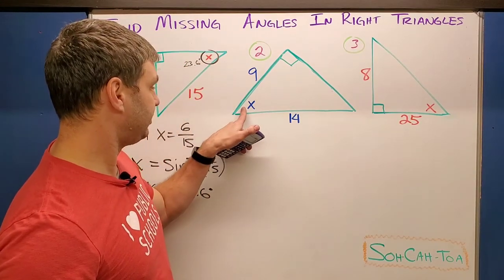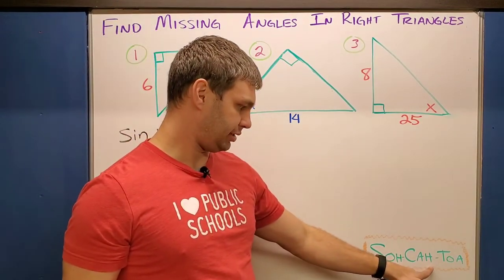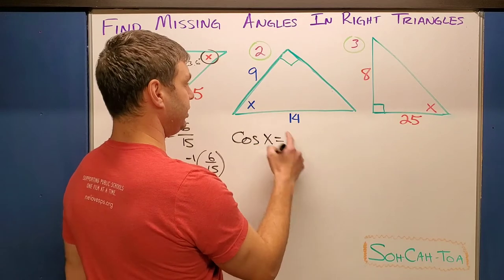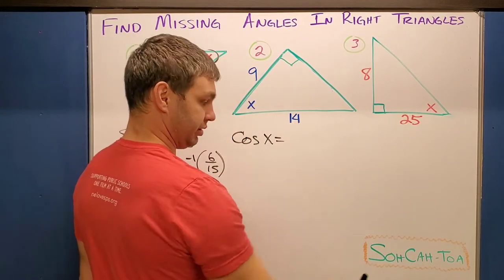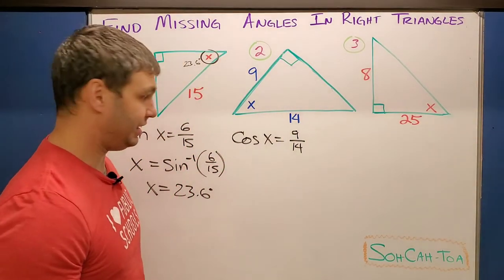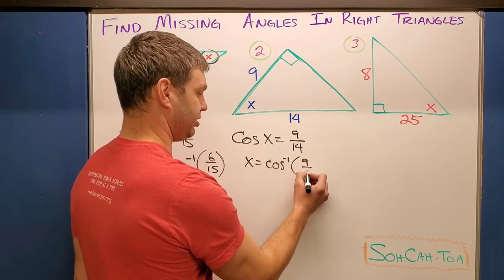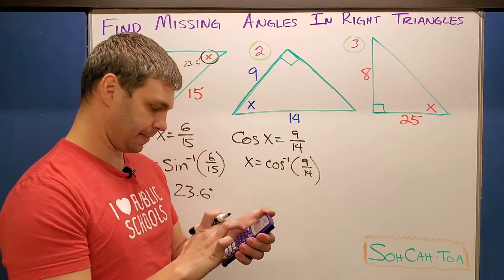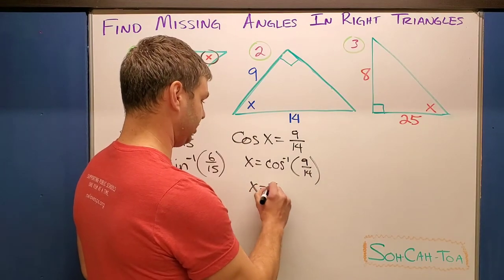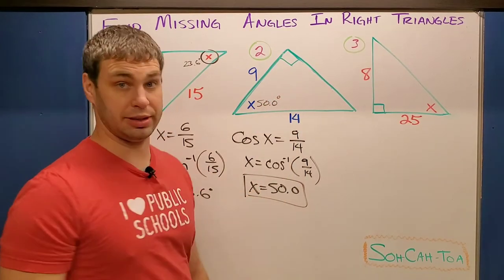Number two: this time our X is down in this corner and we have the adjacent leg and the hypotenuse. Adjacent and hypotenuse corresponds with cosine. Let's write that out: cosine of my angle X equals adjacent over the hypotenuse. This is written in the right order, A and then H. So your adjacent 9 over your hypotenuse 14. We have to use the inverse cosine, so I'm going to say X equals the inverse cosine of that same fraction, 9/14. Let the calculator do all the work for you. This one gives me 49.99, so I think that's safe to round up to 50. We'll say X equals 50.0. I'll put that in right here: 50.0 degrees.